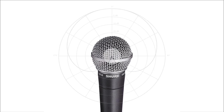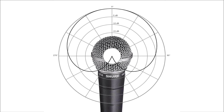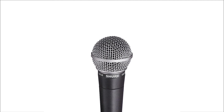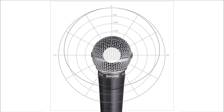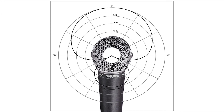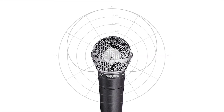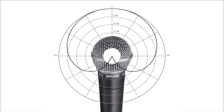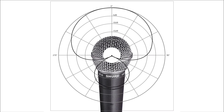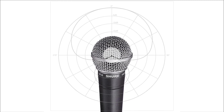Next, we have the cardioid pickup pattern. There are a few different variations of this pattern, including subcardioid, supercardioid, and hypercardioid. The cardioid patterns are by far the most used in live sound applications. The way that they reject sound from the sides and behind results in a much cleaner signal, with limited susceptibility to feedback or pickup of spillover sound from other instruments or vocalists.